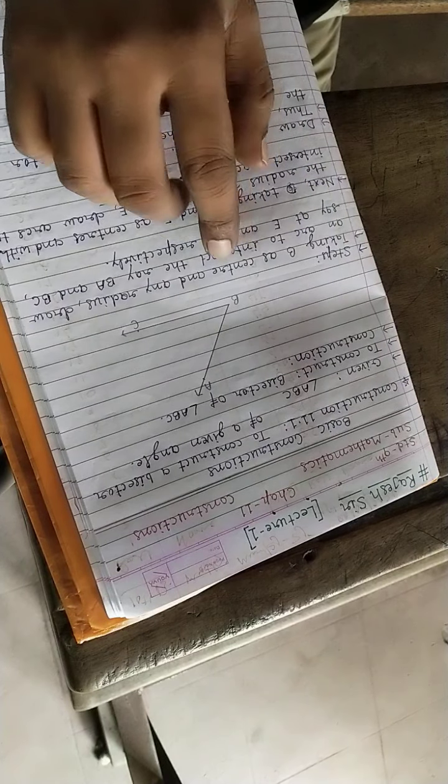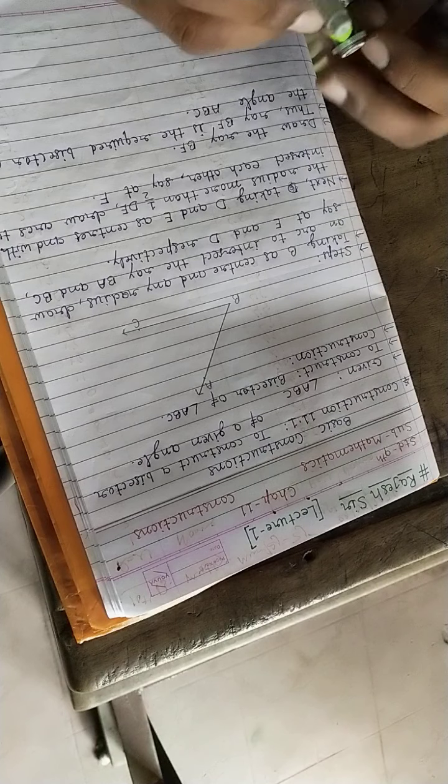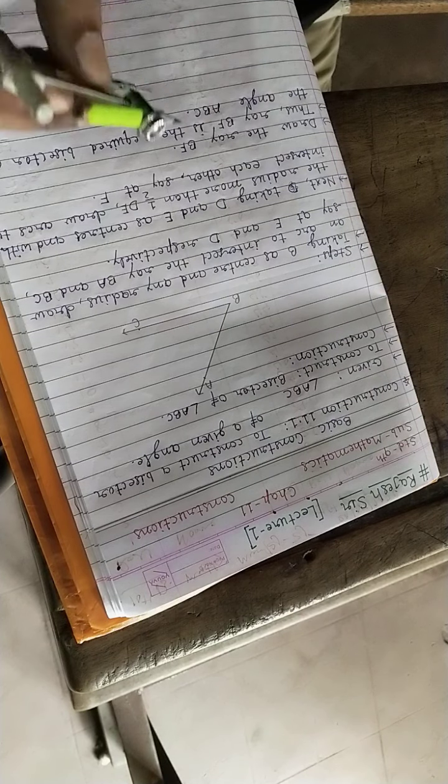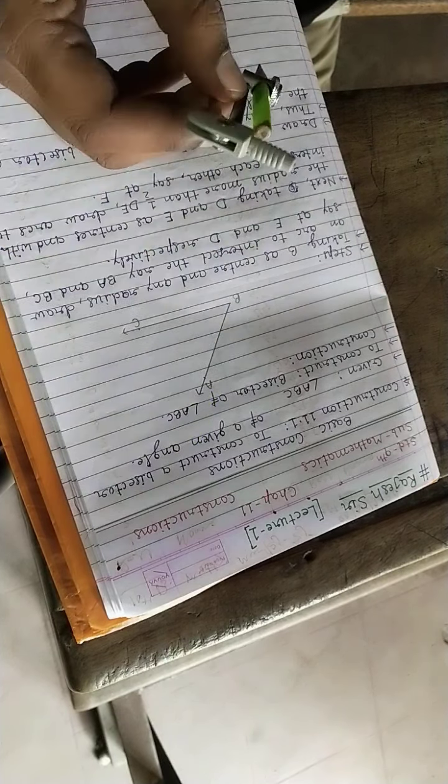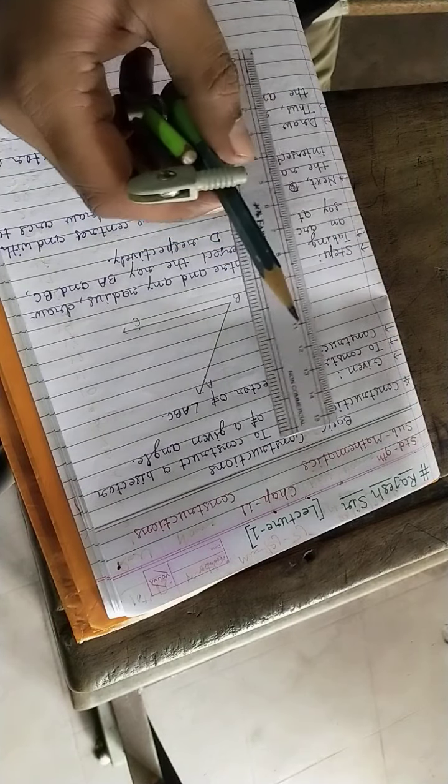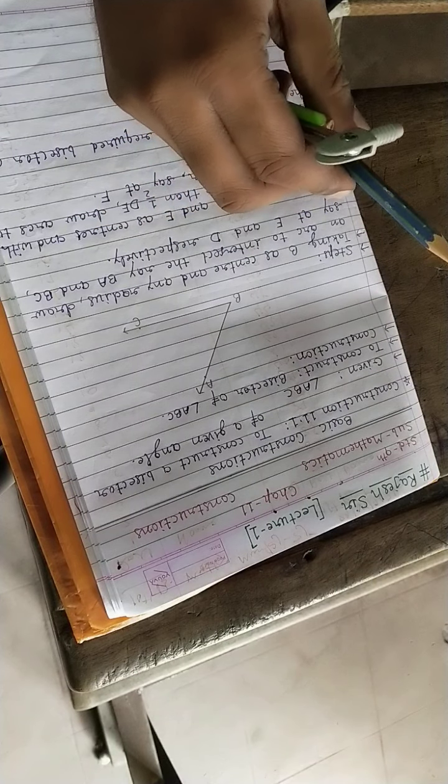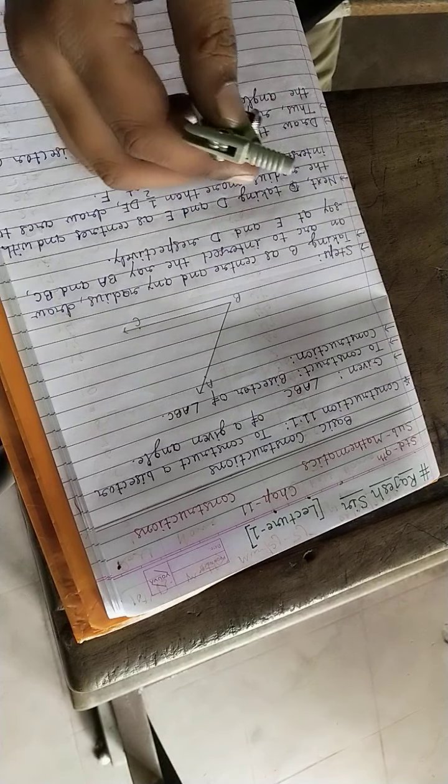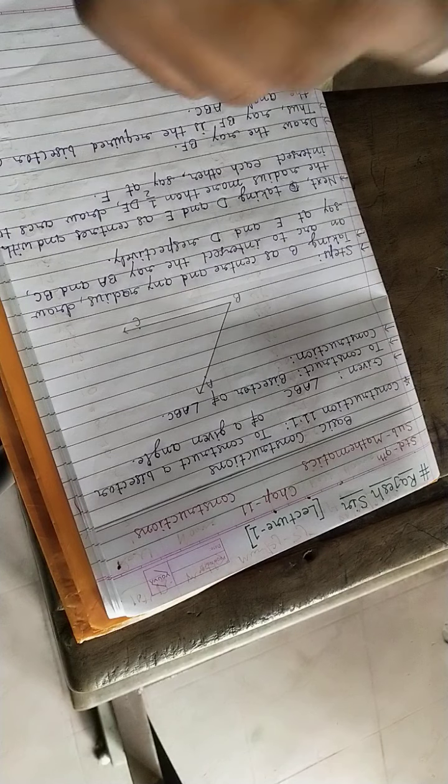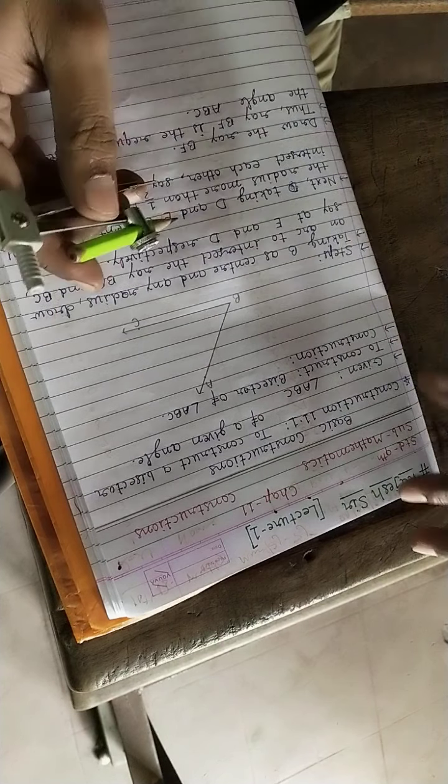In construction, we will see how to draw the bisector of an angle. We require compass, pencil, scale, eraser, sharpener - everything we need. You are suggested to have a mathematical geometrical instrument box in which all these things must be present.